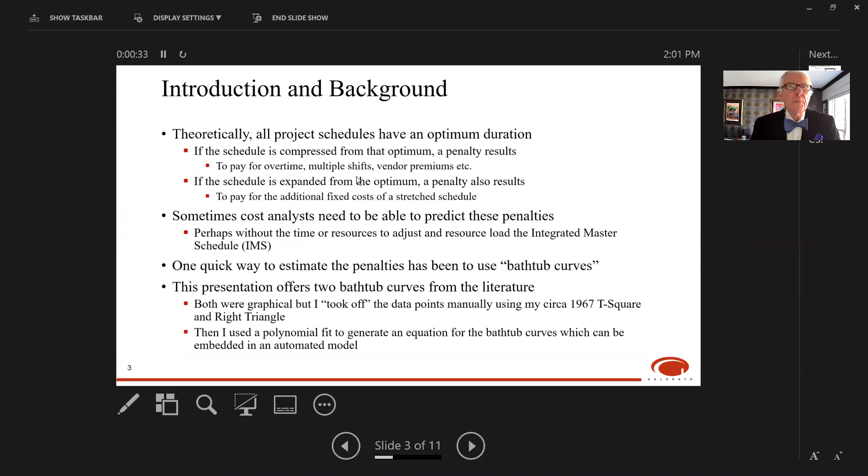First, a little introduction and background. Theoretically, all project schedules have some optimum duration. If the schedule is compressed from that optimum, there should be a penalty to pay for overtime, multiple shifts, and vendors' premiums for delivering hardware and software early. If the schedule is expanded from the optimum, there should also be a penalty to pay for the additional fixed cost of a stretched schedule.